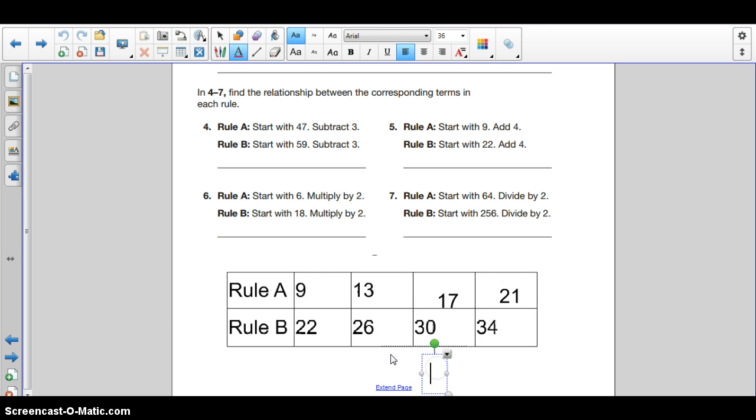All right. There we go. So now, what is the relationship? 9, 22, 13, 26, 17, 30, 21, 34. What relationship do you see with those numbers?